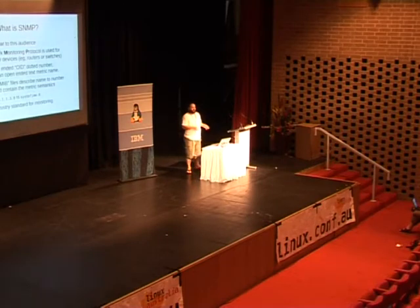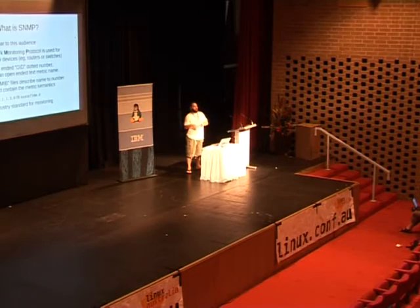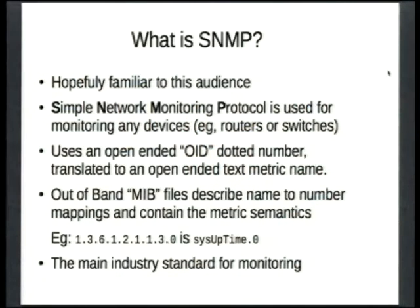What SNMP normally uses is a text string that's got dots in it, that's open-ended. You can have as many as you want to make it as deep as you want, to have it expandable. And that gets translated through to an OID that is used internally in the device as just a series of dotted numbers. You can see two examples up there of that.